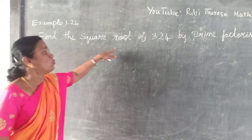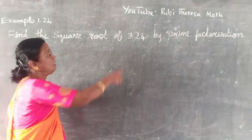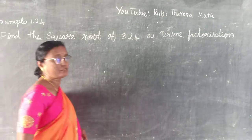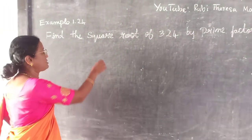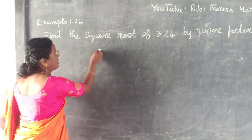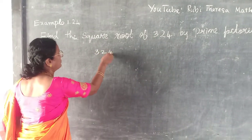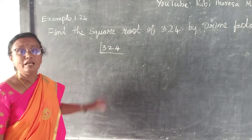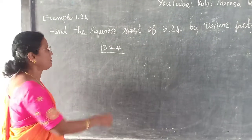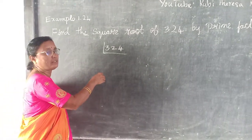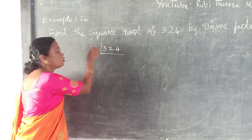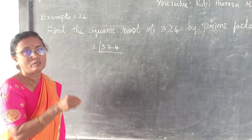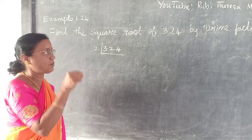Find the square root of 324 by prime factorization. So 324 — this is an even number. So which prime number can we take? Very good — 2. 2 is the only even prime number.